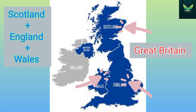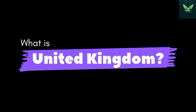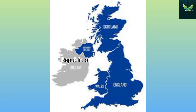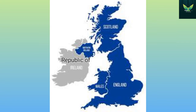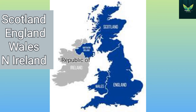What is the United Kingdom? When we combine Great Britain with Northern Ireland, we refer to it as the United Kingdom. The United Kingdom consists of four countries: Scotland, England, Wales, and Northern Ireland.